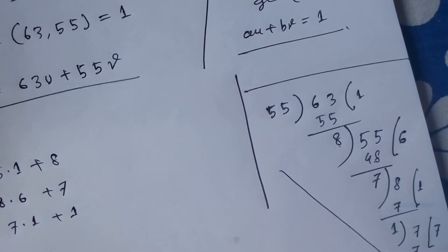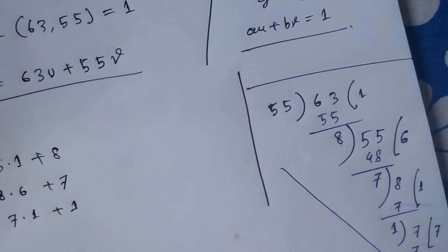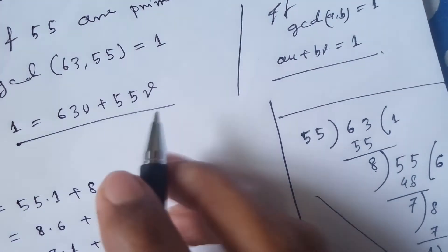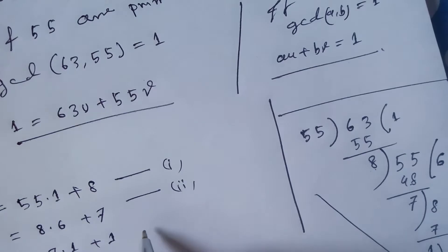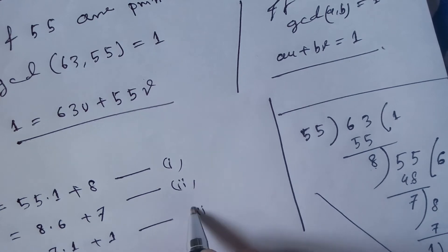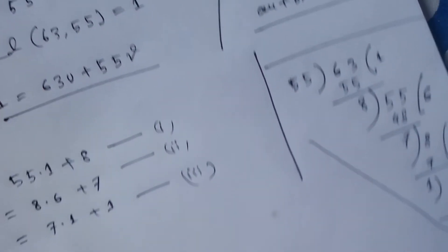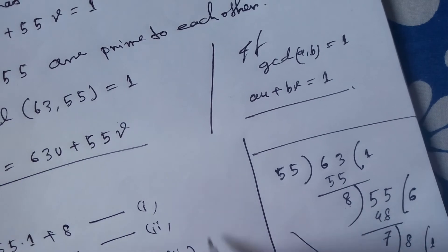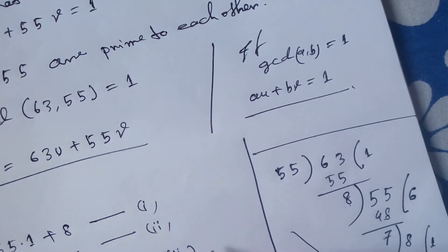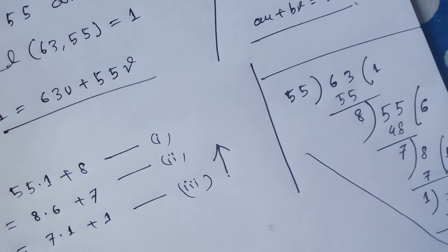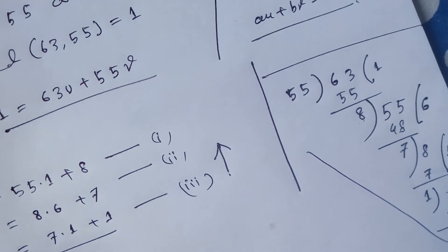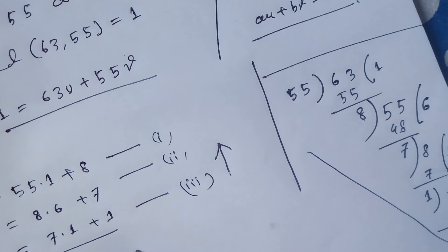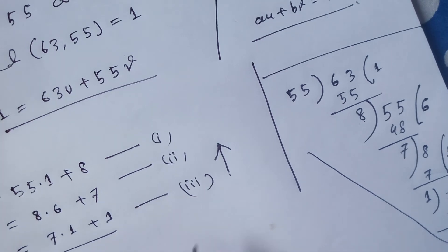Here is the backward process. First we can write 1 equals 8 minus 7 times 1.